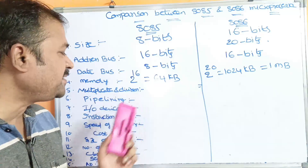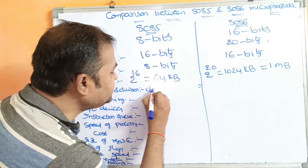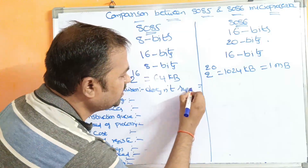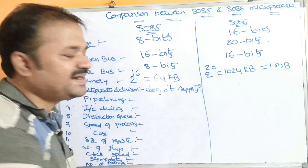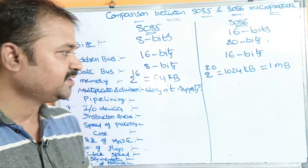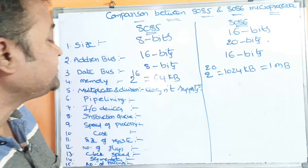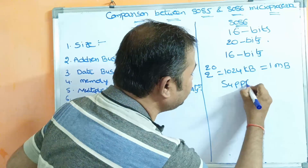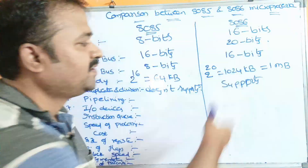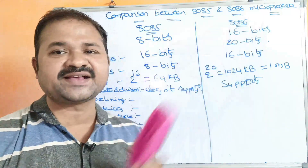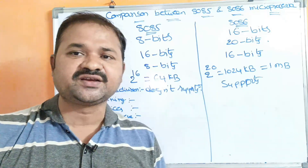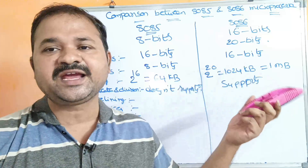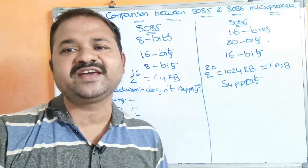The next characteristic is multiplication and division. The 8085 microprocessor does not support multiplication and division operations. Whereas the 8086 microprocessor supports both multiplication and division, having dedicated instructions for those operations, making it very easy to perform them.